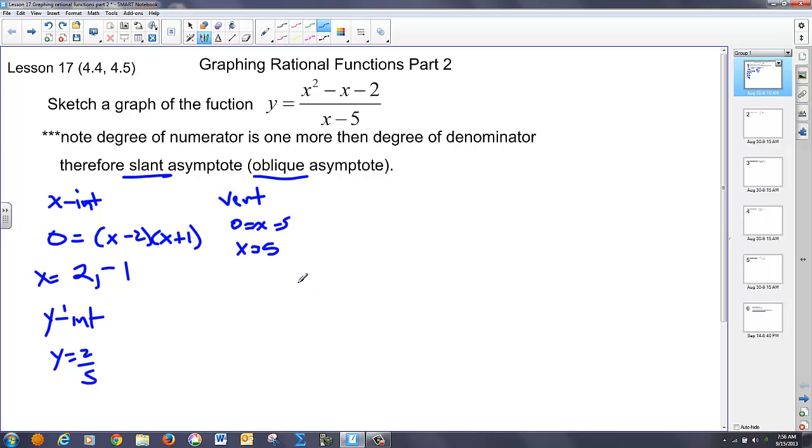And now we're going to create this slant asymptote. To get a slant asymptote we do long division of the numerator by the denominator. So if you remember polynomial long division we say x times what is x squared? That's x. I multiply and get x squared minus 5x. Take and subtract that whole piece out which gives me 4x minus 2. And then x times what is 4x? That's a plus 4. Multiply it through. That's 4x minus 20. Get a remainder of 18. But in this case we're looking for a slant asymptote and a slant is the equation of a line. Well our answer up here is in the form of y equals mx plus b. So this is my slant asymptote.